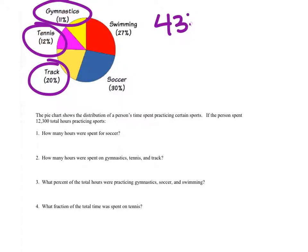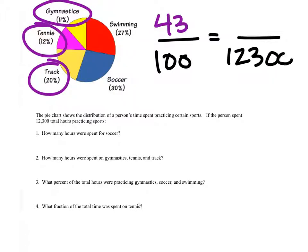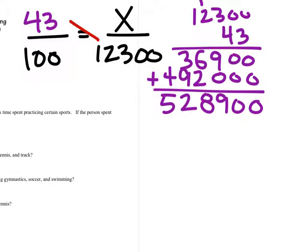So in the percent proportion, it's just 43 over the 100. And that should equal, again, we already know the total number of hours, 12,300. We just want to know how many hours that would be. All right, so I'm going to use cross-multiplication once again, 43 times 12,300. All right, so by cross-multiplying, that's a 4 by the way, sorry. We get 43 times 12,300, which is that 528,900. Then we'll cross-multiply the x in 100, which gives us 100x.